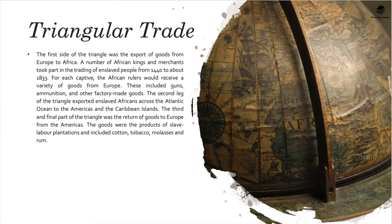In the triangular trade, the first side of the triangle was the export of goods from Europe to Africa. African kings and merchants took part in trading enslaved people from 1440 to about 1833, receiving goods such as guns, ammunition and other factory-made goods for each captive. The second leg exported enslaved Africans across the Atlantic Ocean to the Americas and Caribbean islands. The third and final part of the triangle was the return of goods to Europe from the Americas — products of slave labor plantations including cotton, tobacco, molasses and rum.